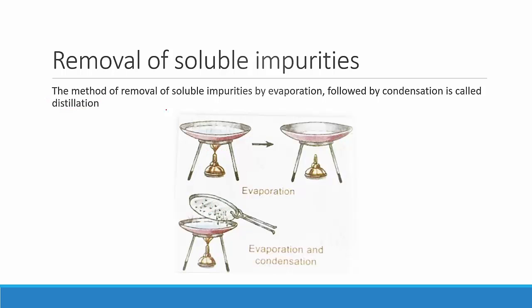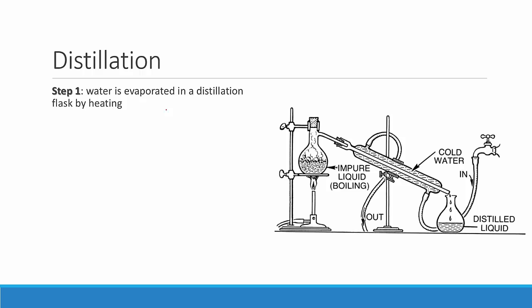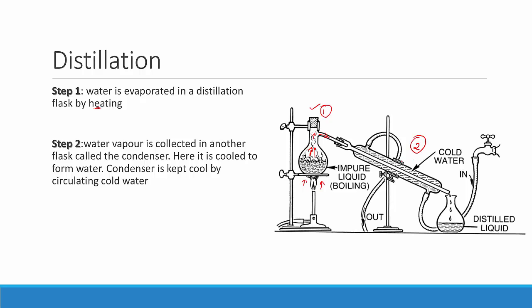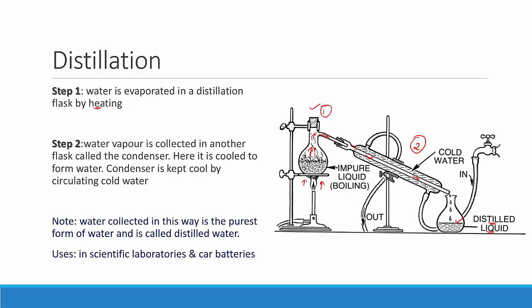Let's look at how a distillation setup looks. It has two main steps. First, water is evaporated in a distillation flask by heating from below. In step two, the water vapor is collected in another flask called the condenser, which is kept cool by continuous circulation of cold water. Water collected in this way is the purest form of water and is called distilled water. Distilled water cannot be used for drinking because we need certain minerals in water for it to be fit to drink. It is used in scientific laboratories and in car batteries.